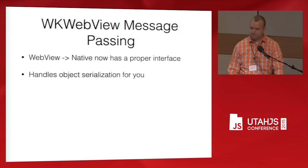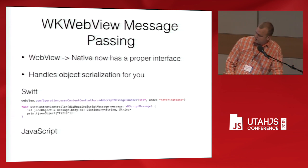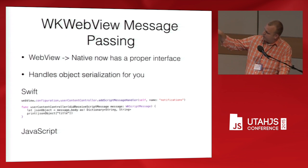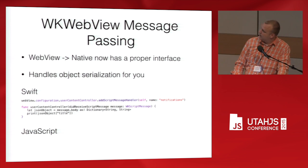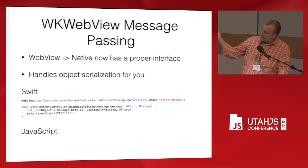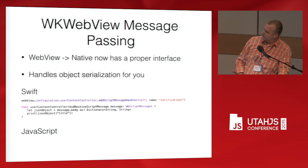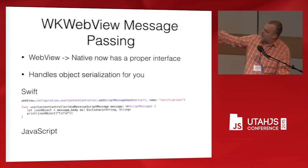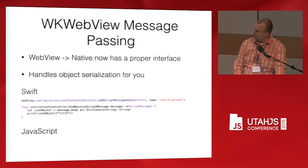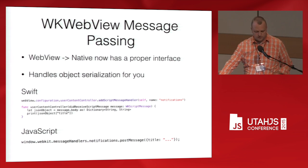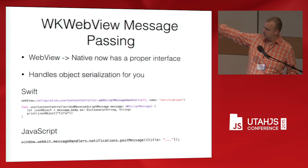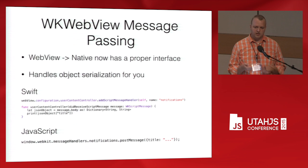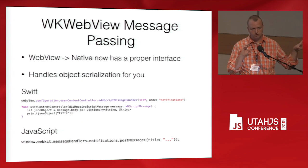The message passing essentially looks like this: you add a script handler with some name — called 'notifications' for example — and register a callback. Whenever JavaScript sends a message, you handle it and grab data from it. From JavaScript, you'd call something like: window.webkit.messageHandlers.notifications.postMessage(). 'notifications' is the name you registered. You can send basically anything encodable as JSON — null, numbers, strings, JSON objects, and arrays — and those get converted to iOS data structures automatically, so you don't have to manually parse them.